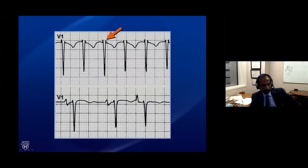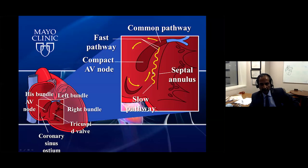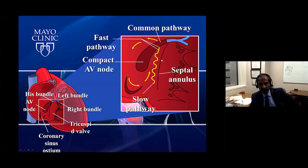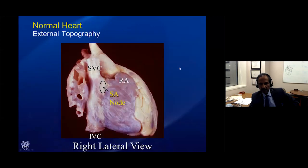Just a couple of things. As a trainee, one of the most perplexing things about this arrhythmia is the simultaneous activation of the atrium and the ventricle. In the early days, it was thought that was because the origin of the arrhythmia was in the node and could go to the atrium or the ventricle. What we know now is that AVNRT is largely an atrial circuit that happens to have its turnaround point in some part of the AV node.